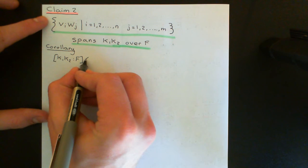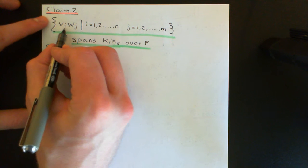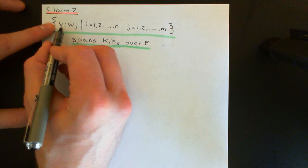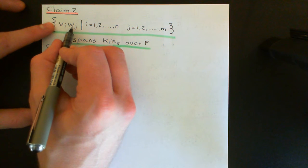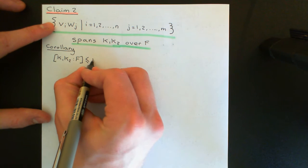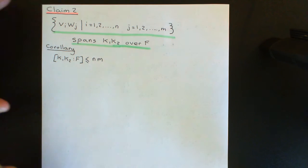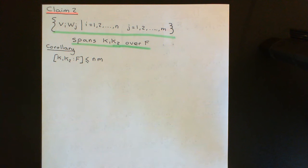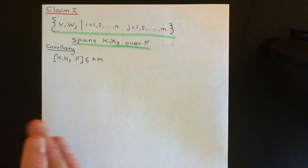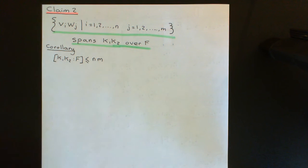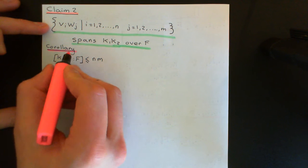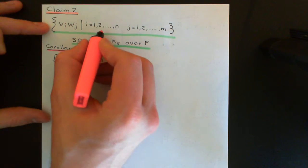This is going to be less than or equal to how many vectors we've got in here. There are n possibilities for v_i, and there are m possibilities for w_j, so this is less than or equal to n times m. So we can always conclude that the composite of k1 and k2 is going to be nicely finite over F, and it's going to be less than or equal to the degree of k1 over F times the degree of k2 over F.